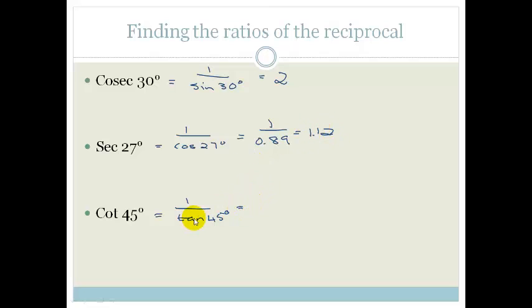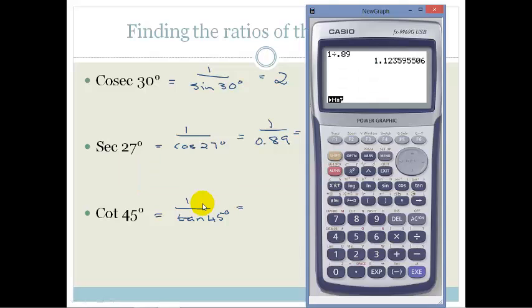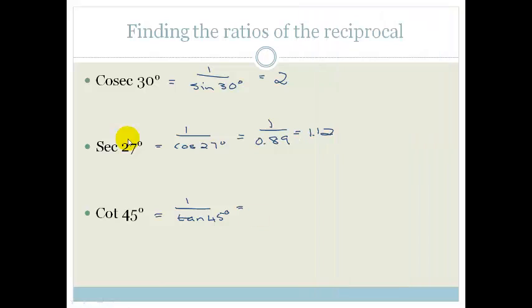Now, let's do cot 45°. So cot 45 is the inverse of tan 45. So again, I'm just going to clear it, and I'm going to go tan 45, and that is 1. So obviously, 1 over 1 is just 1. So that makes life very easy, and that answer there is just 1. Easy.